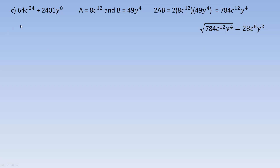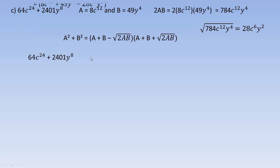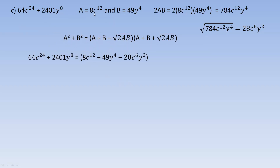So here's the identity again. To do the factoring: 64c to the 24th plus 2401y to the eighth factors into 8c to the twelfth plus 49y to the fourth minus 28c to the sixth y squared, times 8c to the twelfth plus 49y to the fourth plus 28c to the sixth y squared.